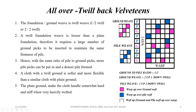The foundation or ground weave is twill weave. Here we are using 1-up 2-down or 2-up 2-down twill. Using twill weave, the twill foundation weave is looser than a plain foundation. Therefore, it requires a large number of ground picks to be inserted to maintain the same firmness of pile.